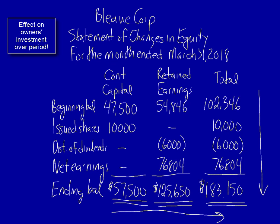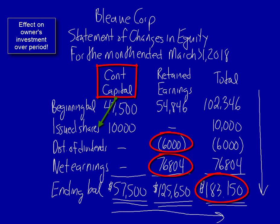The statement tells stakeholders about the investors' wealth through details about contributed capital and how it has changed over time. It also tells them about the effect of earnings on the investors' wealth position, and any distribution of that wealth back to investors in the form of dividends. Those details are only available from the statement of changes in equity. In the next video we're going to complete the statements with the statement of financial position.